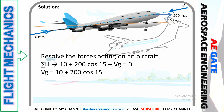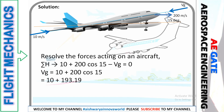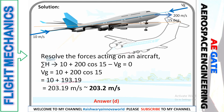Simplifying the equation: Vg equals 10 plus 200 cos 15. Applying this on your calculator, cos 15 gives you 10 plus 193.19, so when you solve it you get 203.19 meters per second. Rounding off, we can say 203.2 meters per second, which is answer D.